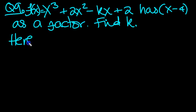So here, by the factor theorem, f of 4 then, because x minus 4 is a factor, f of 4 will be 0.